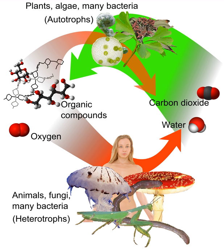Heterotrophs represent one of the two mechanisms of nutrition, or trophic levels, the other being autotrophs. Autotrophs use energy from sunlight — photoautotrophs — or inorganic compounds — lithoautotrophs — to convert inorganic carbon dioxide to organic carbon compounds and energy to sustain their life.